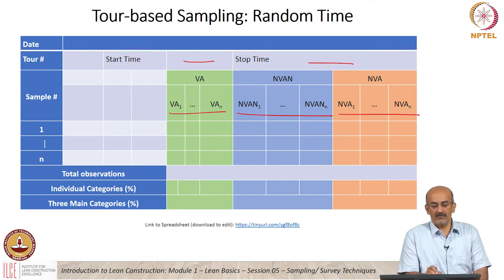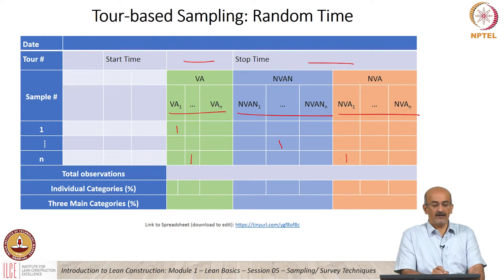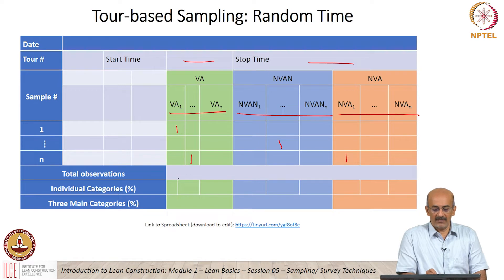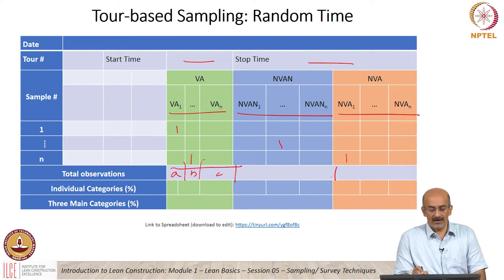As and when I make an observation for a sample, I would record it. At the end, I would have sampled for my time period and I will tally the total number of observations in each category — say A, B, C — or I could add total value added observations, total non-value added, and then in each category get my percentages.